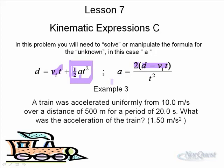So you get 2 times d minus VI over t, or 2 times d minus VIt. Then to get rid of the t squared, you divide by t squared, and you divide both sides by t squared. That's the manipulation.